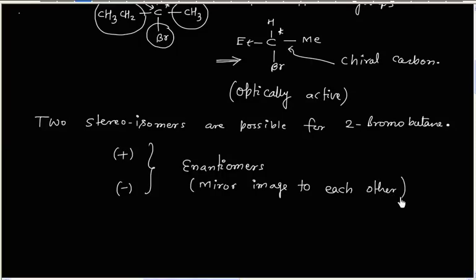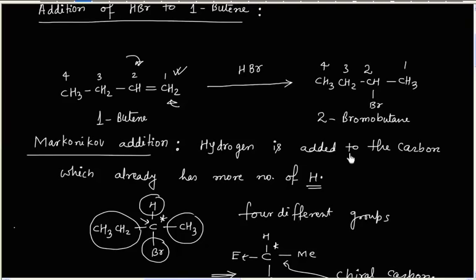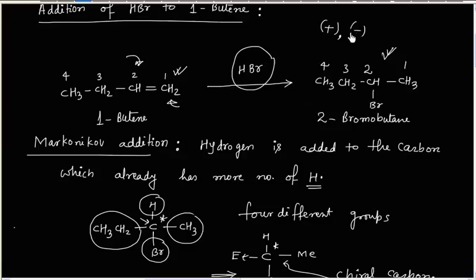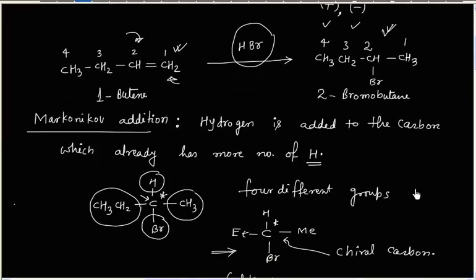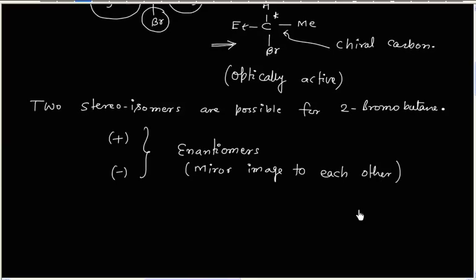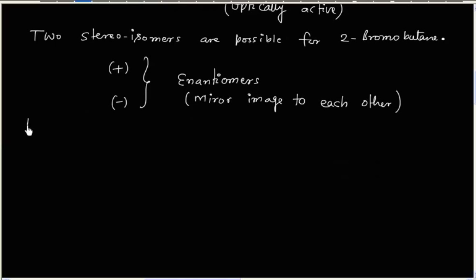Now the question is: in this reaction, that is addition of HBr to 1-butene, what will be the product? Either we will get the plus isomer, or the minus isomer, or both. This can be answered only on the basis of mechanism, so let us consider the mechanism of this reaction.